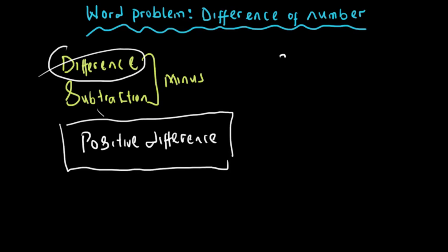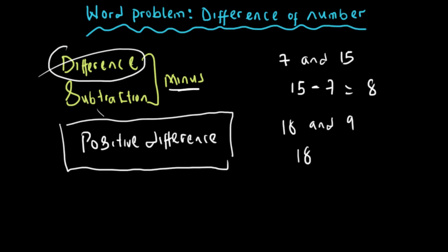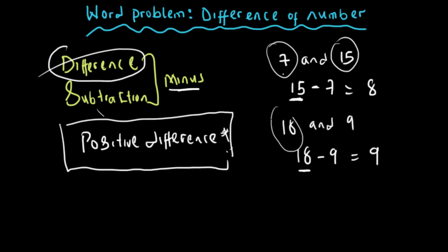If I ask you to find the difference between seven and fifteen, remember difference means minus, so what I mean is fifteen minus seven, which equals eight. If I say find the difference between eighteen and nine, it means eighteen minus nine, which equals nine. So you can see, when asked to find the difference between two numbers, I'm assuming the positive difference, putting the bigger number first.